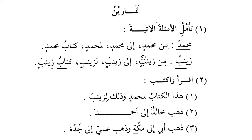Dhahaba Abi ila Makkah-ta - my father went to Makkah. And Dhahaba Ammi ila Jeddah-ta - my uncle went to Jeddah. The ending of Makkah will be Makkata, and Jeddah will be Jeddaha. Both are names of cities. The names of cities are also Mamnoo min as-Sarf, so Makkah and Jeddah do not accept Kasra. They are Majroor but Majroor bil-Fatha.